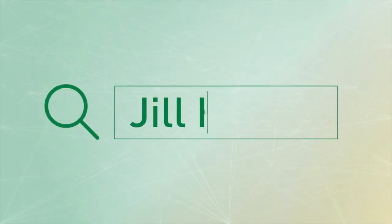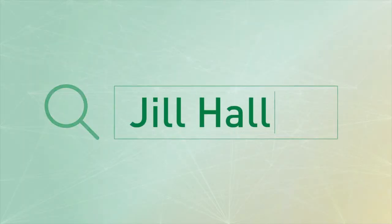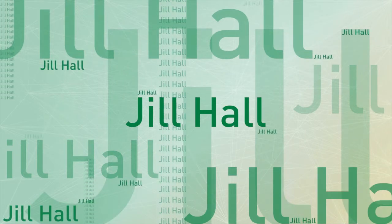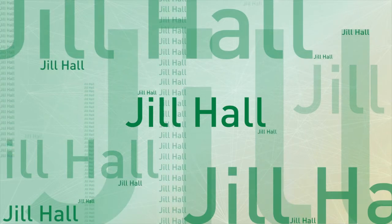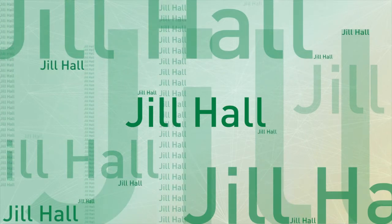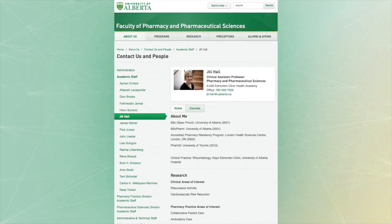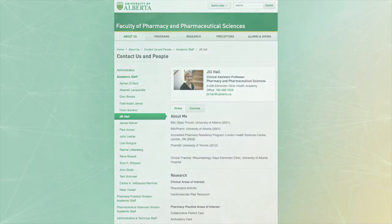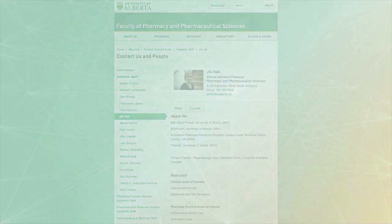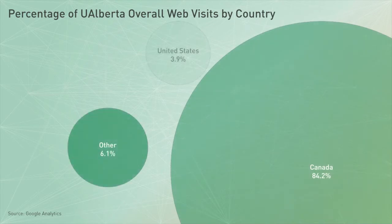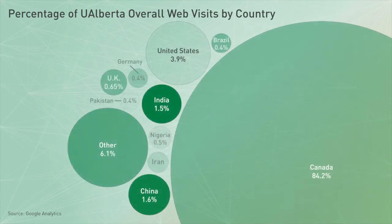If you type Jill Hall into a Google search, you get 55 million hits referencing Jill Halls all over the world. But out of the thousands of Jill Halls across the globe, we want you to find our Jill Hall. We want to see her first — we want her at the top of the Google search listings. My job and research is to use big data constructs like Google to get the most reach and reputational bang for the University of Alberta and its professors.